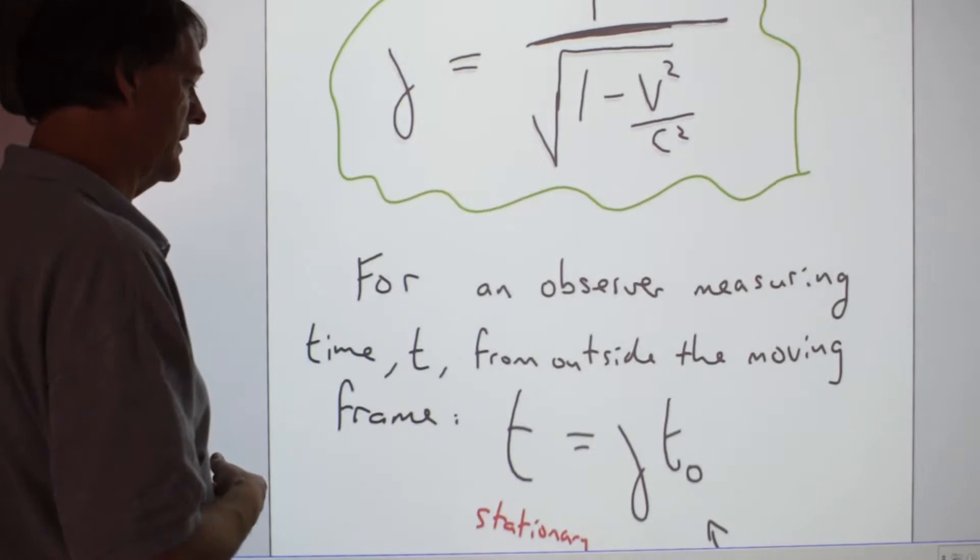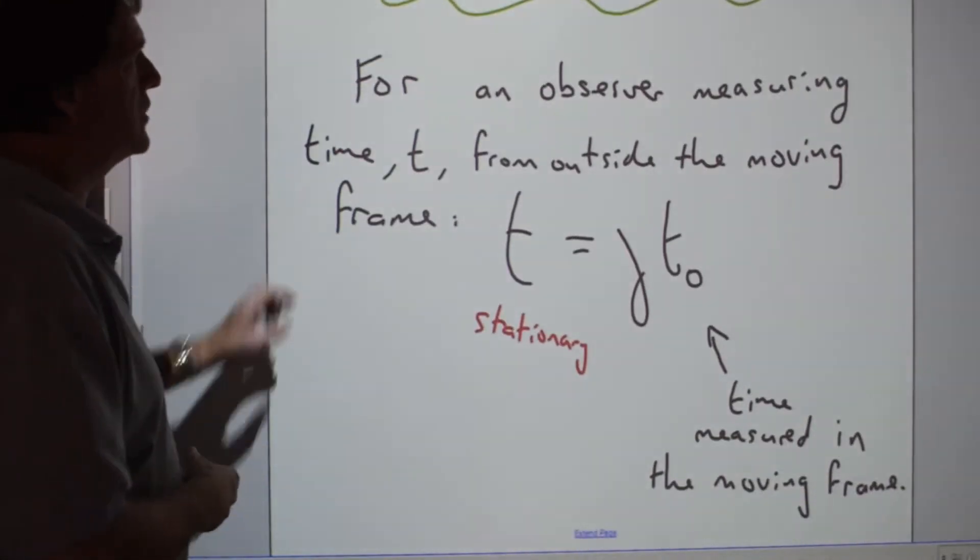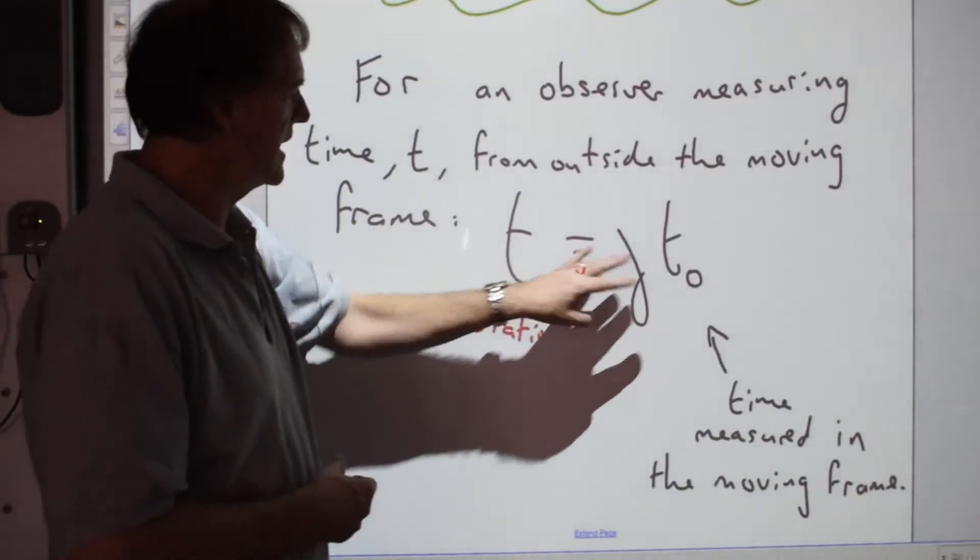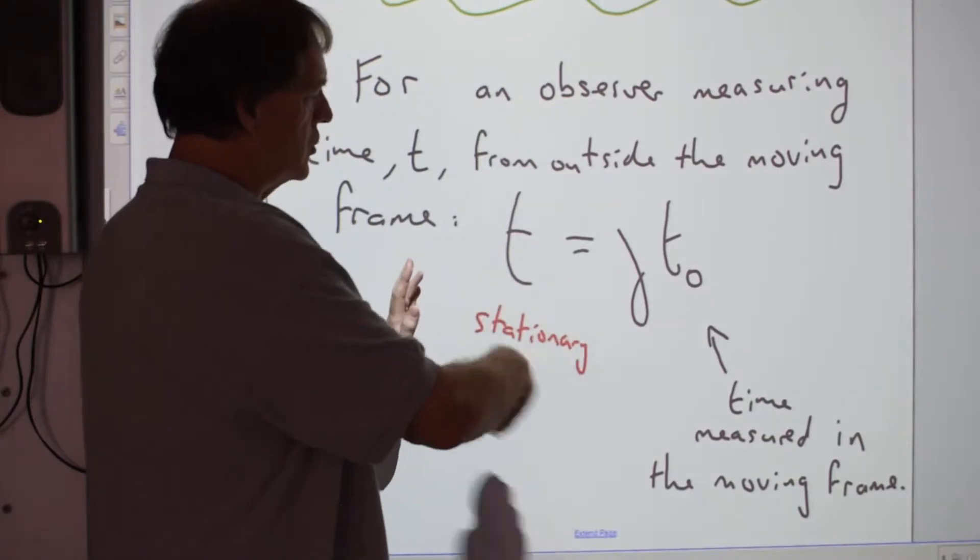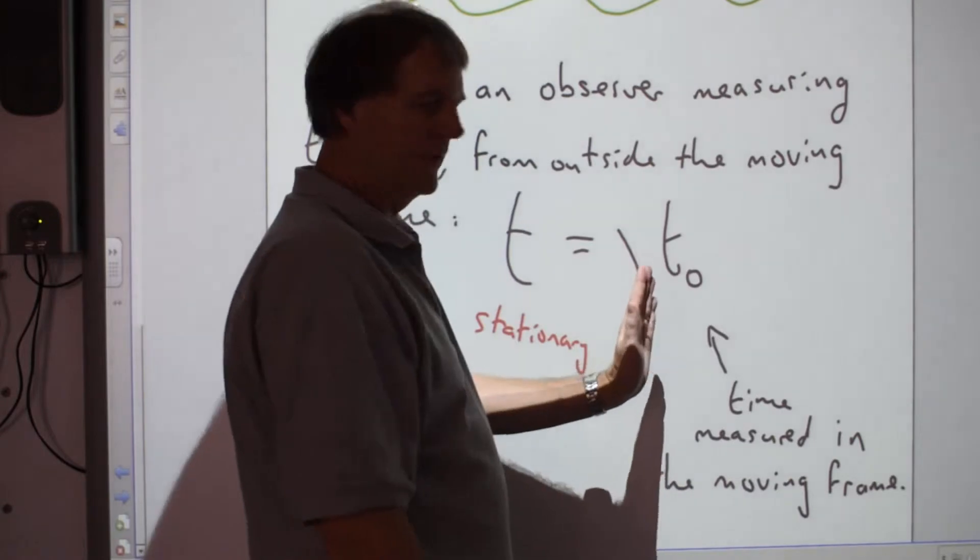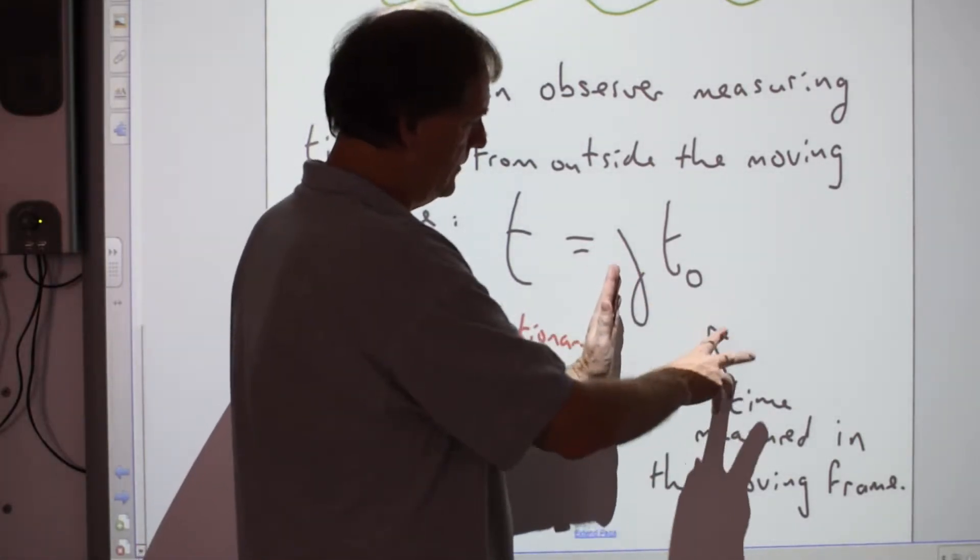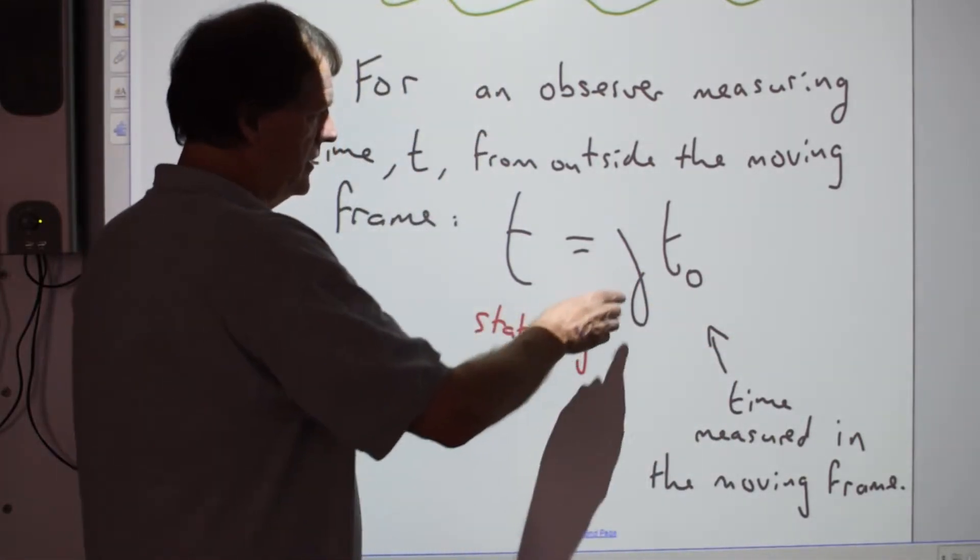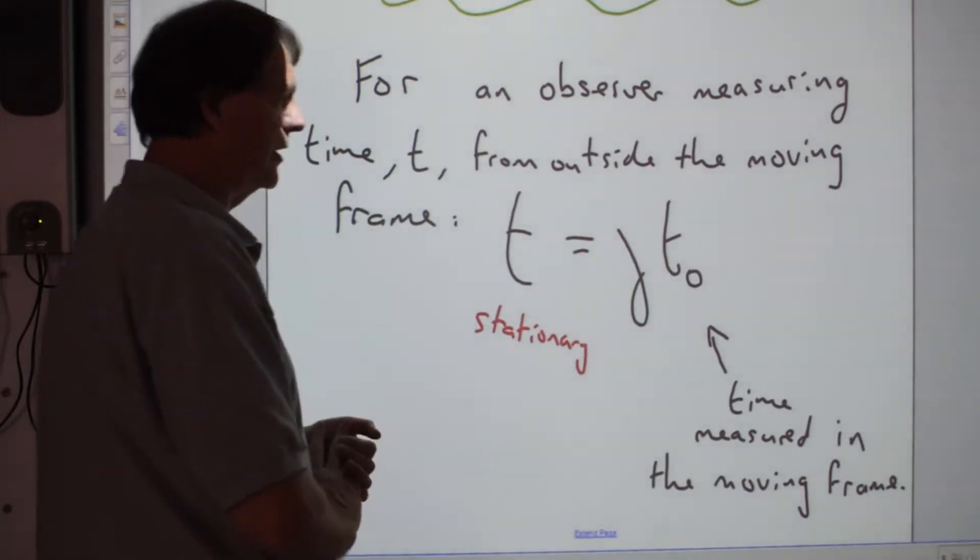As an example of this here, once you've worked out the Lorentz factor, it turns out that the time measured by the stationary observer will be bigger by this factor compared to the one on the moving frame. T₀ is the moving frame time. This is the stationary observer. It's the gamma factor times T₀ to work it out.